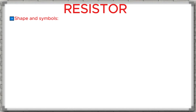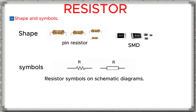Shape and symbols. In electronic devices, especially inside a car's ECU, the resistor is an important component. It is often made from carbon compounds or metal alloys. By adjusting the mixing ratio of these materials, manufacturers can create resistors with different values to suit each specific circuit in the ECU.